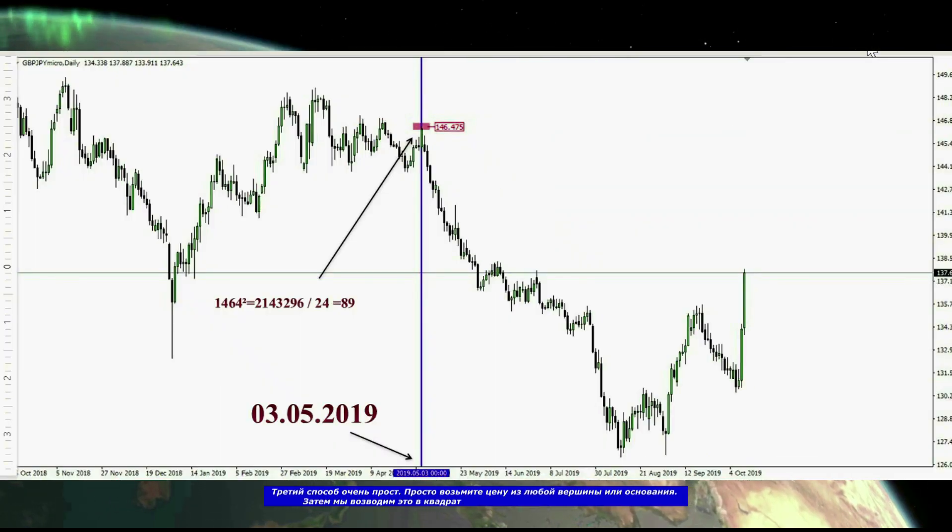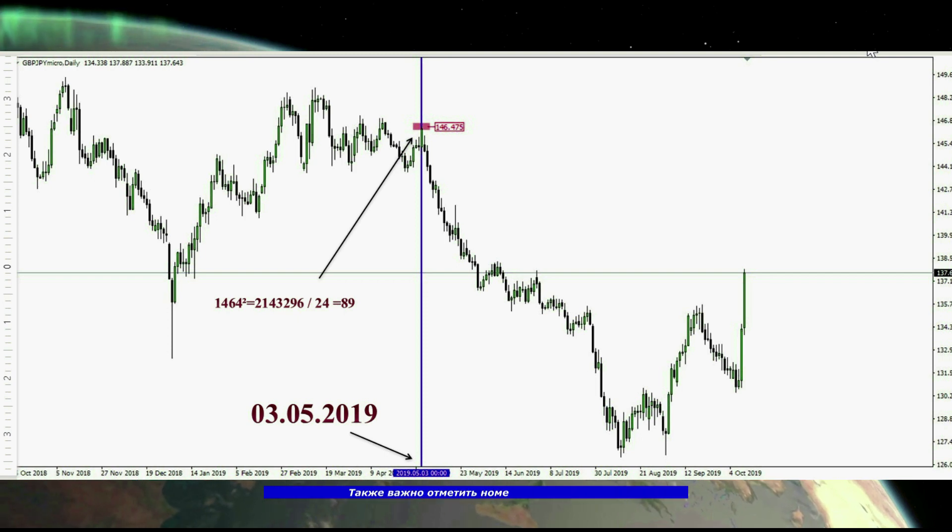The third method is very simple. Just take the price from any vertex or base. Then we square it, and divide it by 24. 24 is 24 hours a day. It is also important to note the number of the day of the reversal.